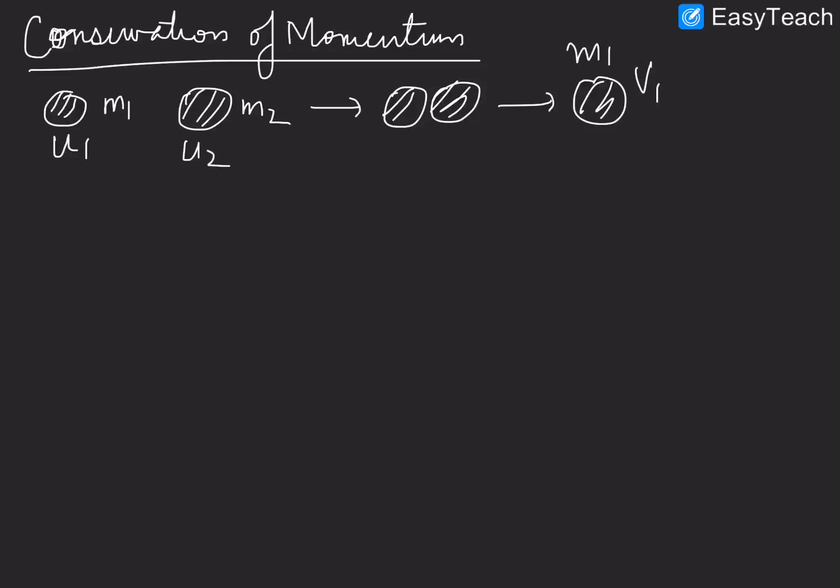Now let us prove that the momentum is conserved. So we will prove the law of conservation of momentum. For that, let us consider that we have any body, which has mass M1 having velocity U1. And it strikes another body having mass M2, having initial velocity U2. Suppose they both collide, and when they collide, their velocities will be changed. And M1 will be having velocity V1, and M2 will be having velocity V2.